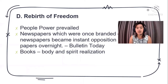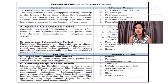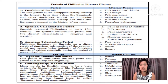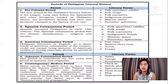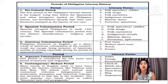The rebirth of freedom saw people power prevail. Newspapers that were banned became instant opposition papers overnight, like Bulletin Today, along with books dealing with body and spirit realization. This summarizes the whole period of Philippine literary history: from folk speeches to free verse during American colonization, to the Japanese-era haiku and tanaga, and on to modern forms of writing including chiclet, mobile phone textula, speculative fiction, flash fiction, blogs, and hafer poetry — all of which will be discussed in future episodes of this 21st century literature course.